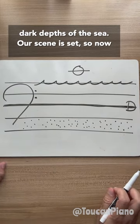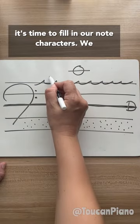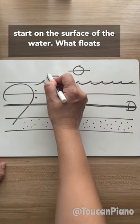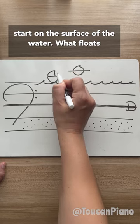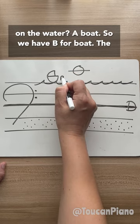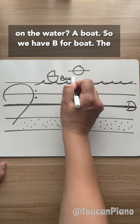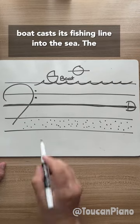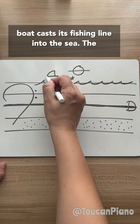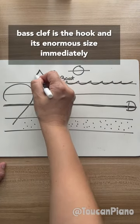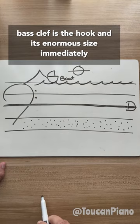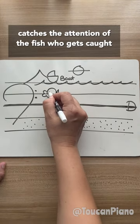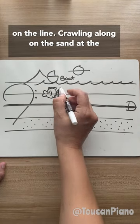Our scene is set, so now it's time to fill in our note characters. We start on the surface of the water — what floats on the water? A boat. So we have B for boat. The boat casts its fishing line into the sea. The bass clef is the hook, and its enormous size immediately catches the attention of the fish, who gets caught on the line.